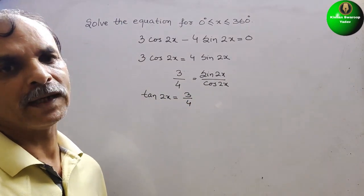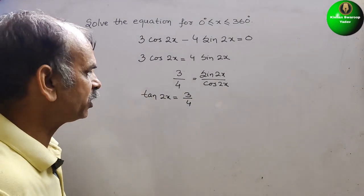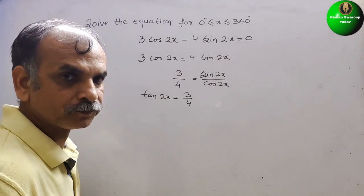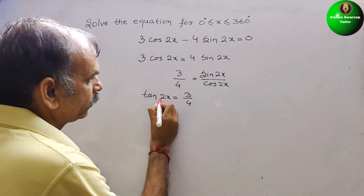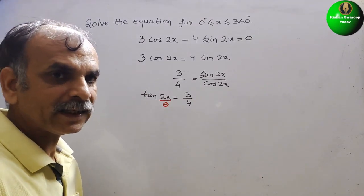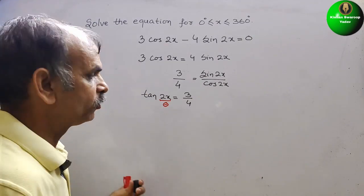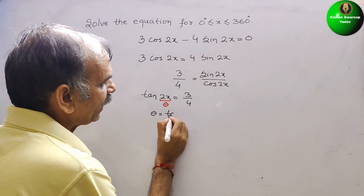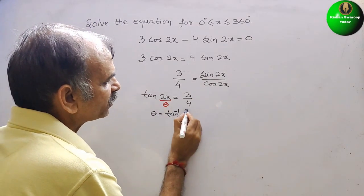So what is your 2x, or we can say, first we will take this as theta. So now, what is your theta? We can say theta is equal to tan inverse of 3 by 4.